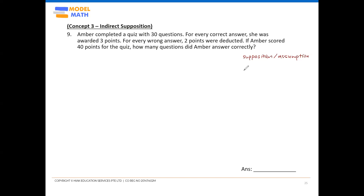There is another kind of supposition concept which you'll see in another video. This one is called indirect supposition. I suggest watching the direct supposition video first to understand the difference. For this indirect supposition question, we call it supposition with penalty — because every time you get a wrong answer, two points are deducted, and that deduction is the penalty.